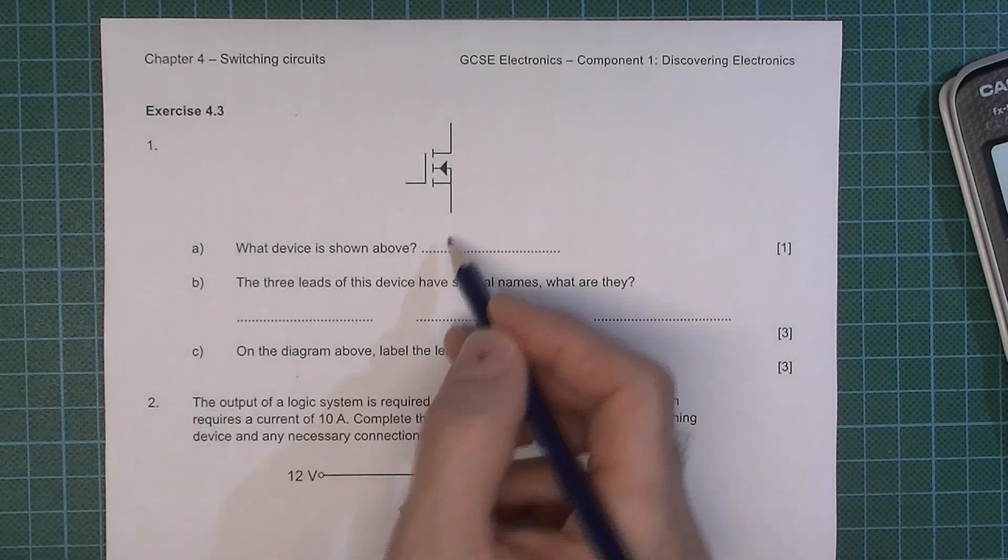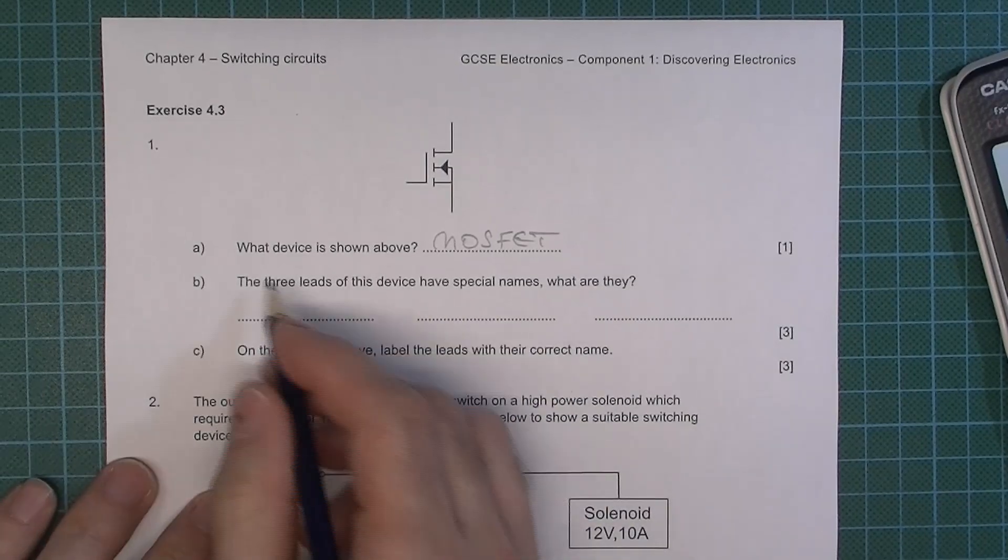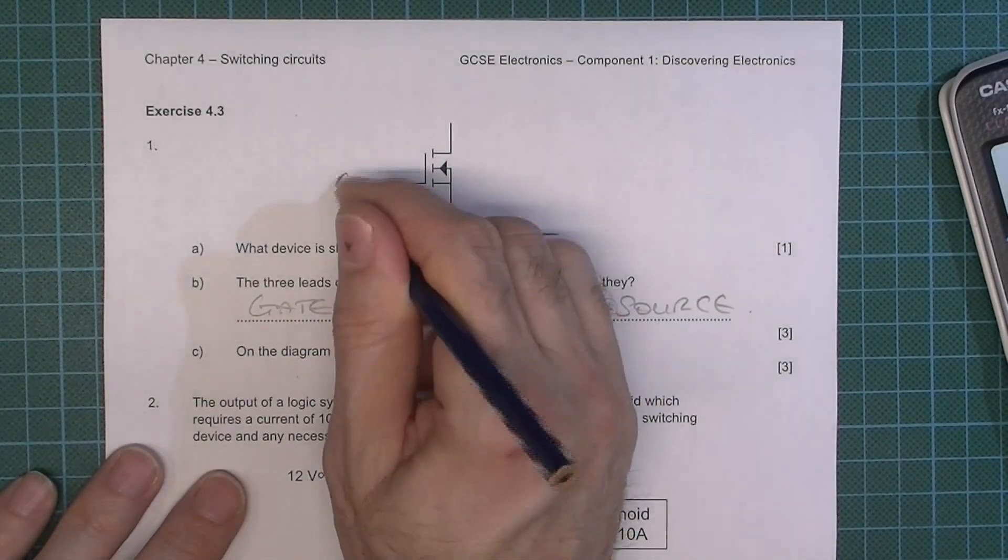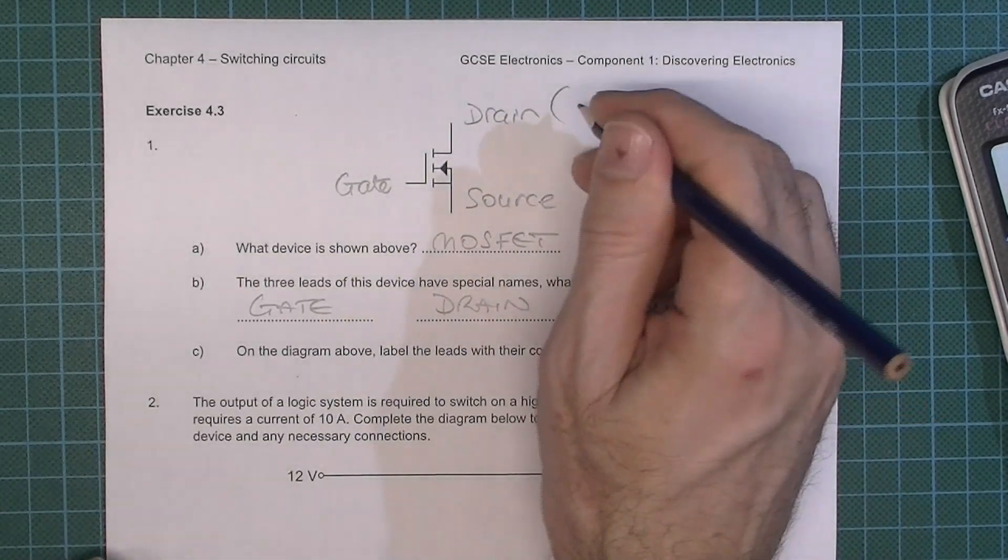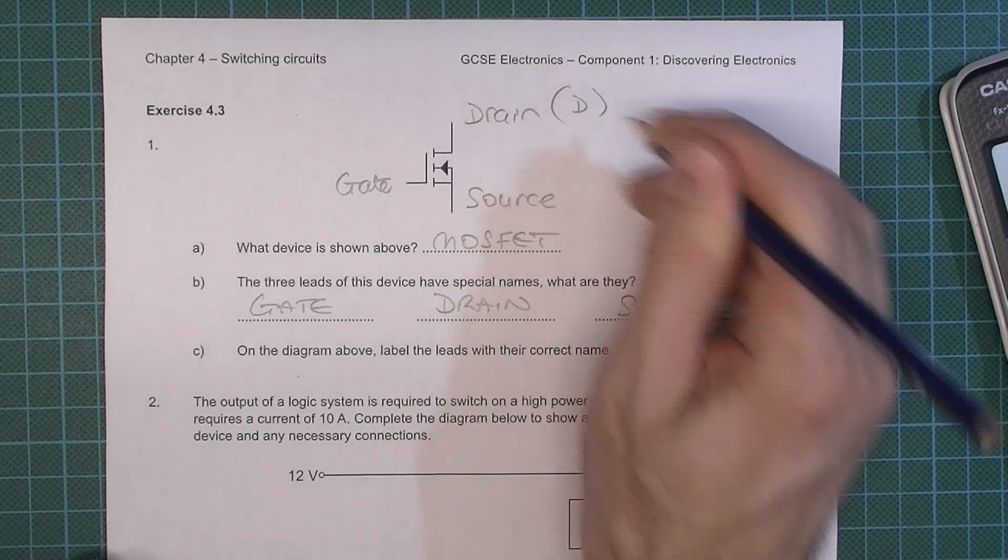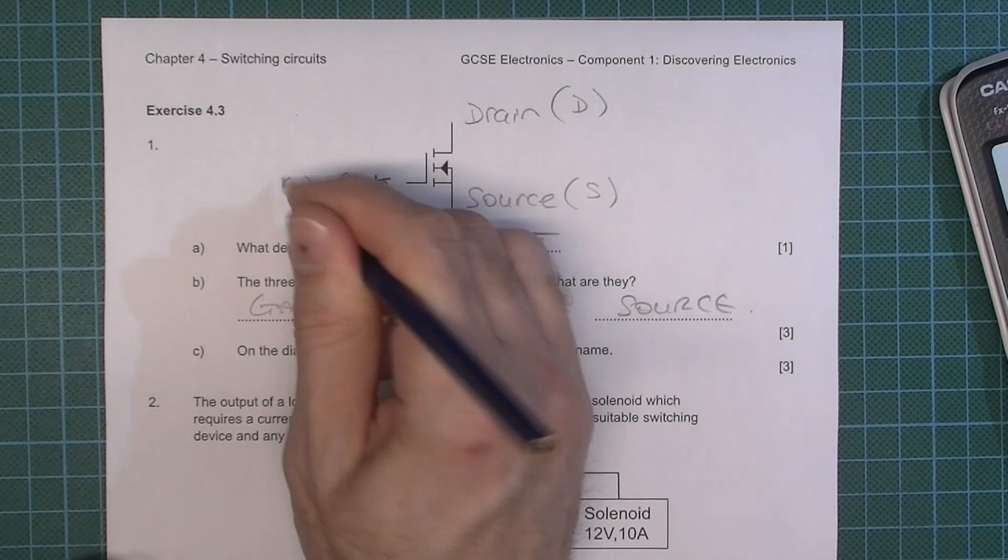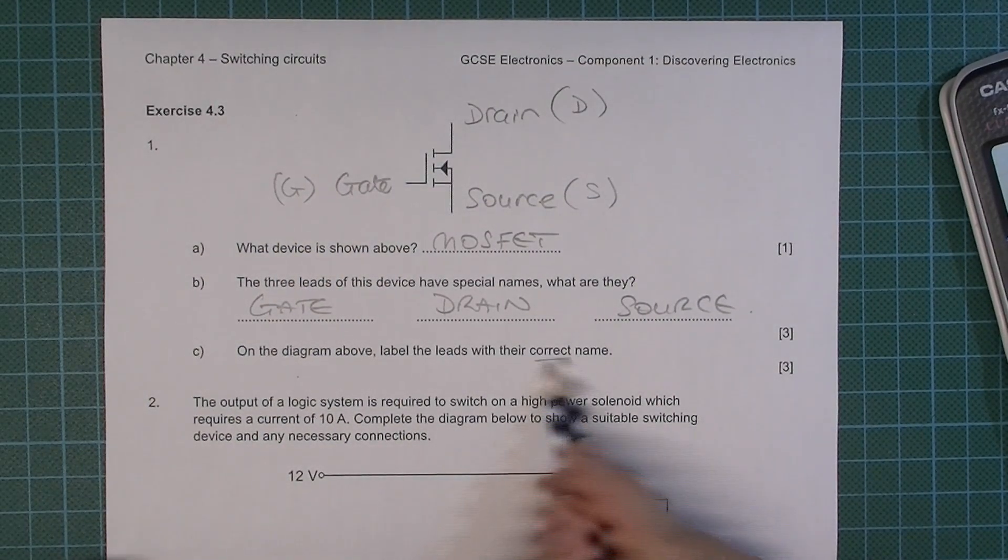What device is shown above? If you're going to label them, you'd actually label them like D, S, and G. That's the normal way to do it but it does say with their correct name.